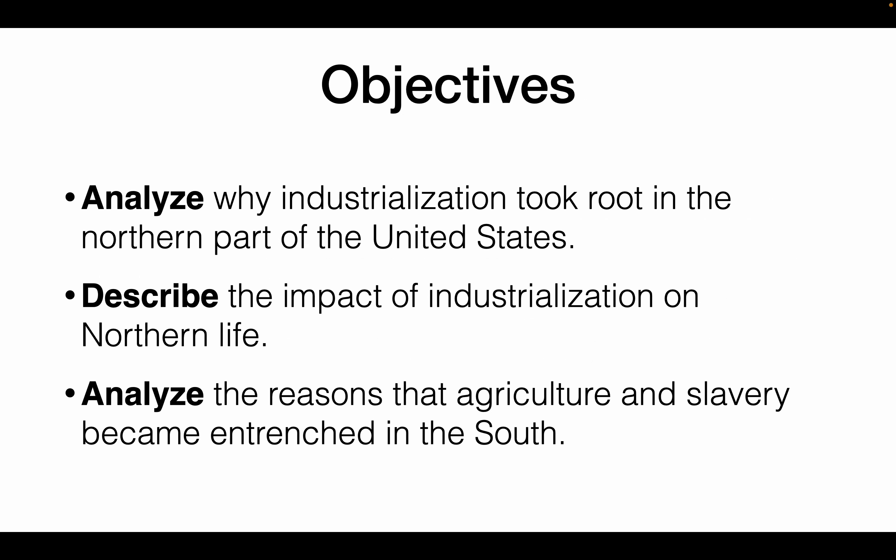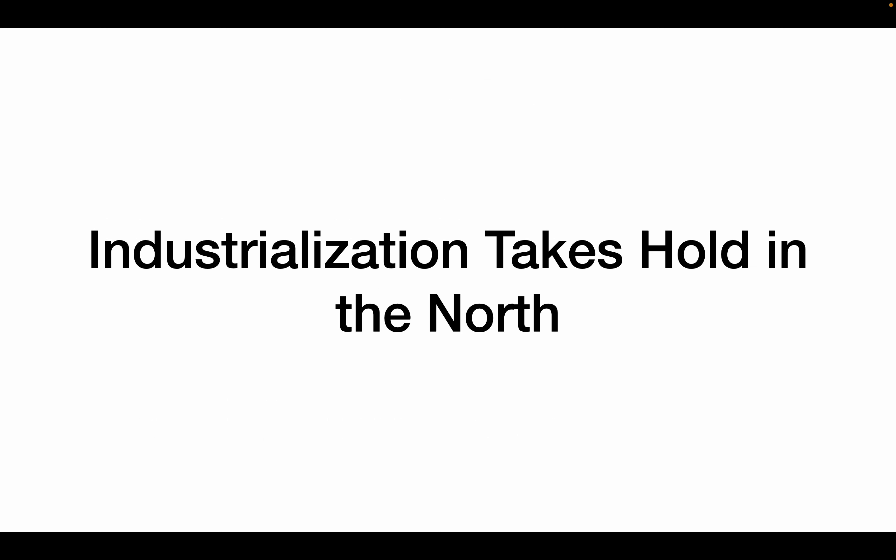Our objectives: we are going to analyze why industrialization took root in the northern part of the United States and not the south, describe the impact of industrialization on northern life, and analyze the reasons that agriculture and slavery became more prominent in the south.